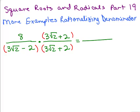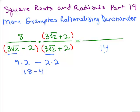I always do the denominator first. In the denominator, this is going to be a squared minus b squared. So I have 3 square roots of 2 times 3 square roots of 2, that's going to be 9 times 2, minus 2 times 2. So basically I'm going to get 18 minus 4, which is 14. So I have 14 in the denominator.